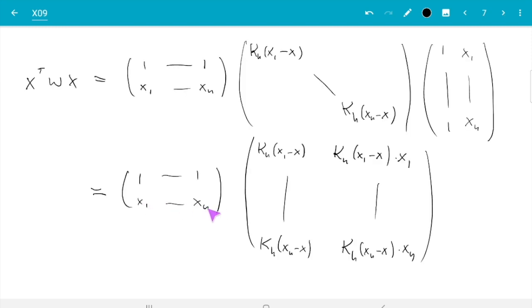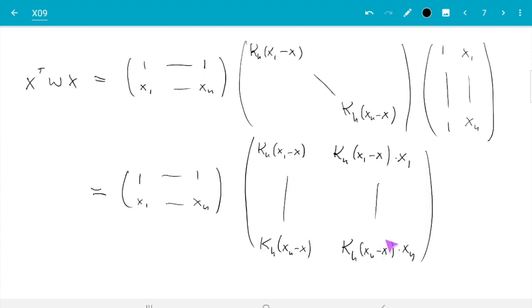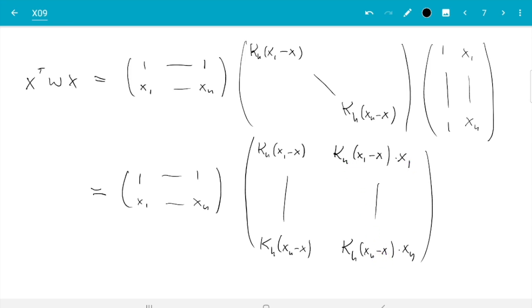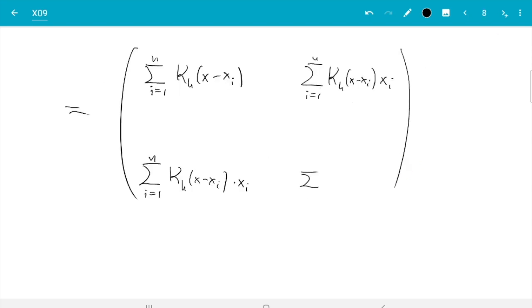Then maybe let's do second row first column. Then we have x i times the kh summed up. So what we get is sum i from 1 to n, kh x minus x i times x i. Then second column will be slightly more complicated but not much. So once with this will be kh times x i summed up. So it's sum i from 1 to n, kh x minus x i times x i. And finally, second row, second column you see is x i times kh times x i. So that's kh times x i squared. So it's sum i from 1 to n, kh x minus x i x i squared. And let me just remind you that was x transpose w x.